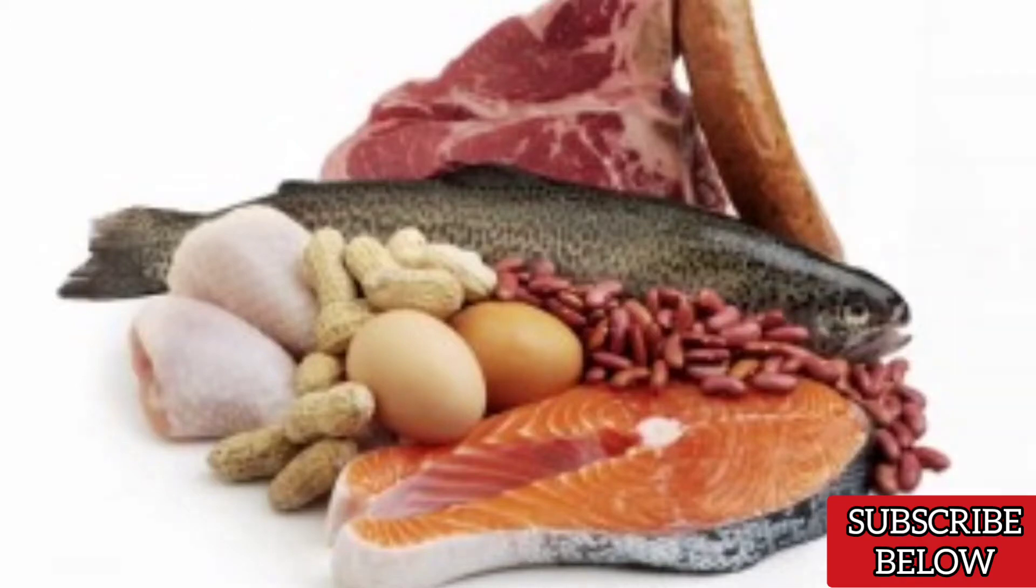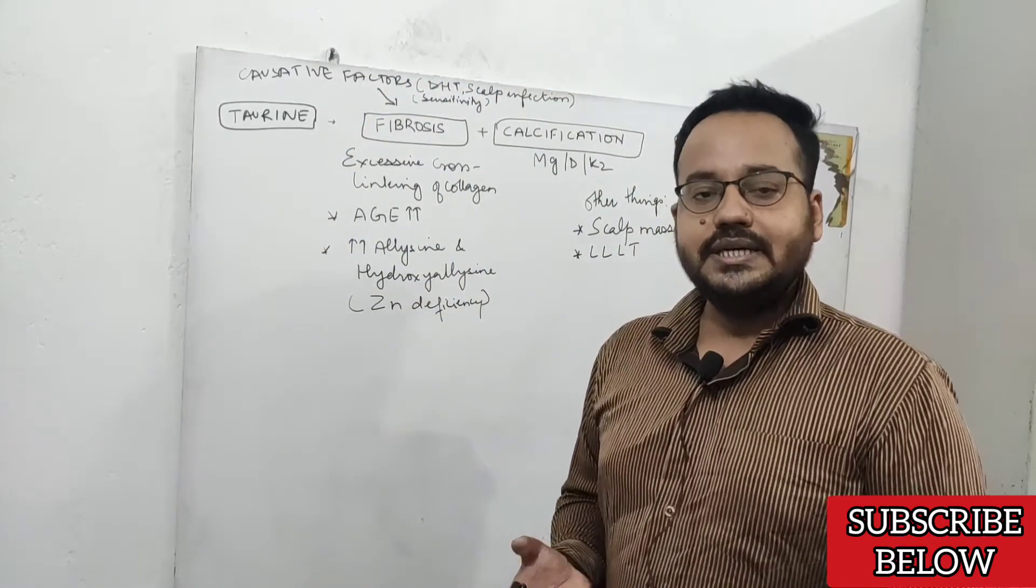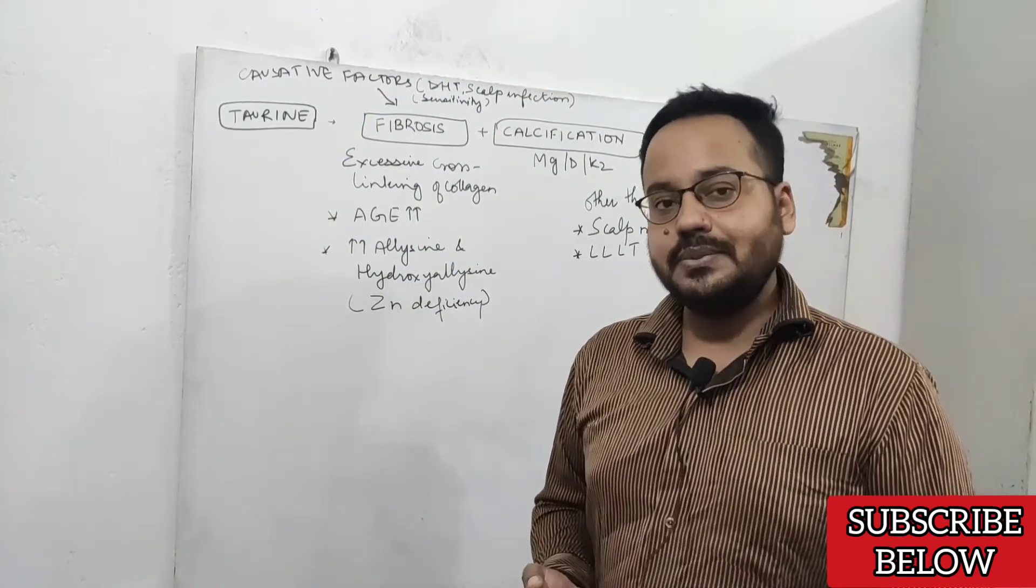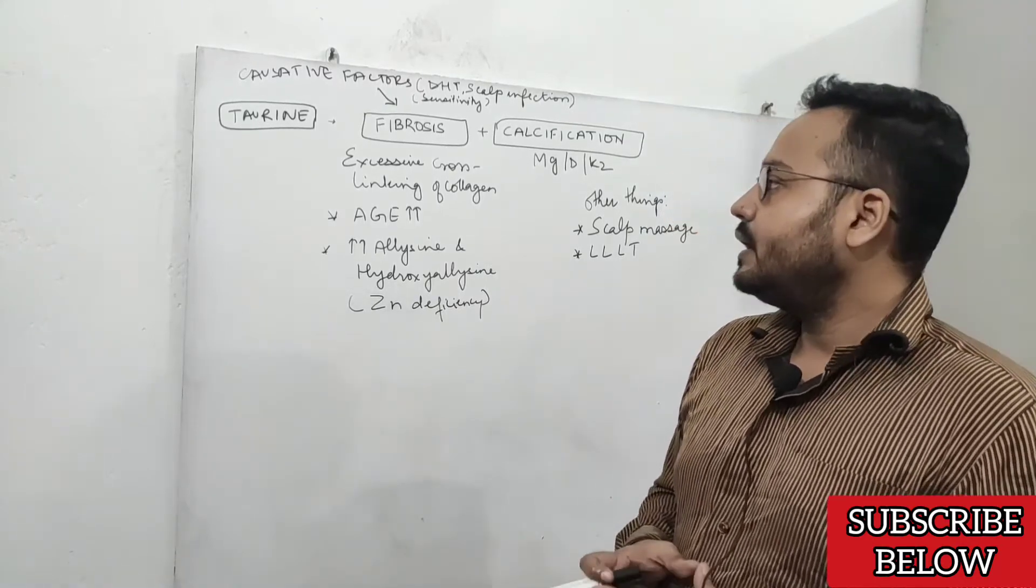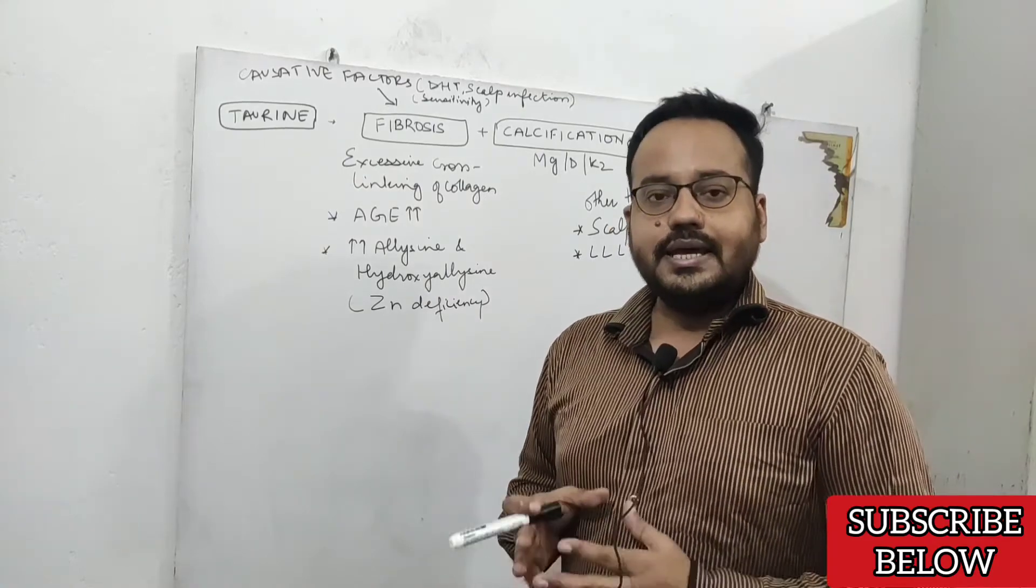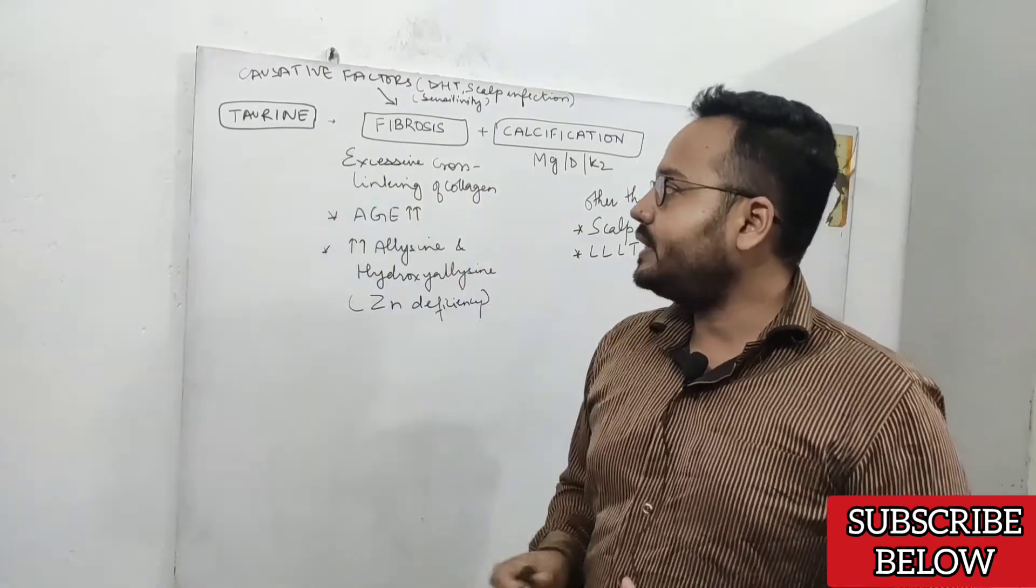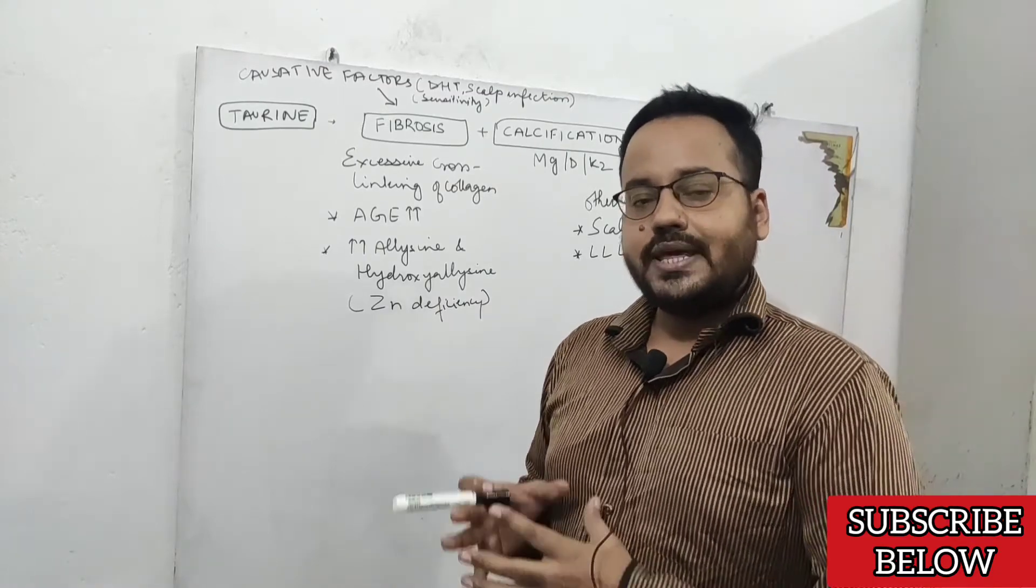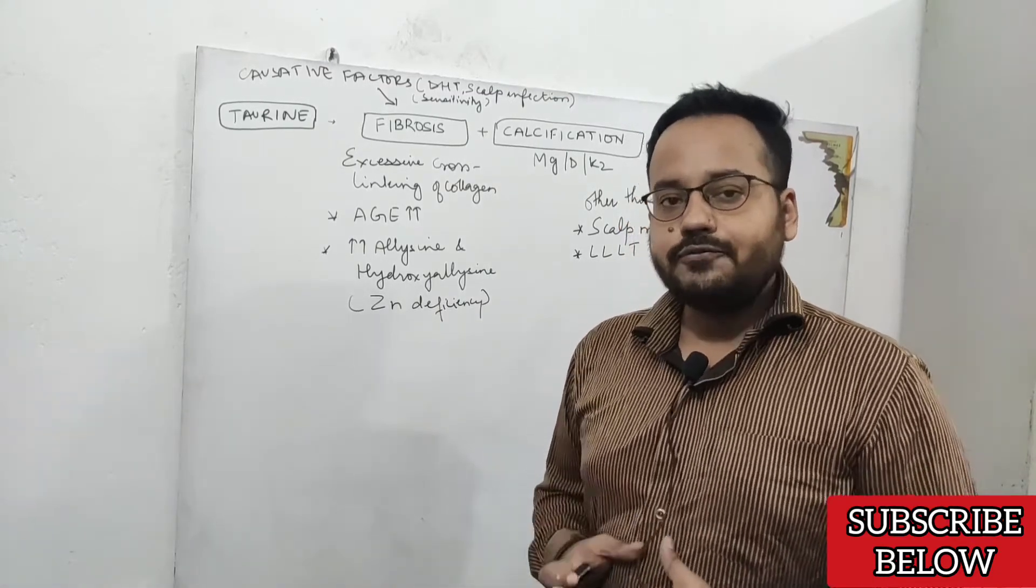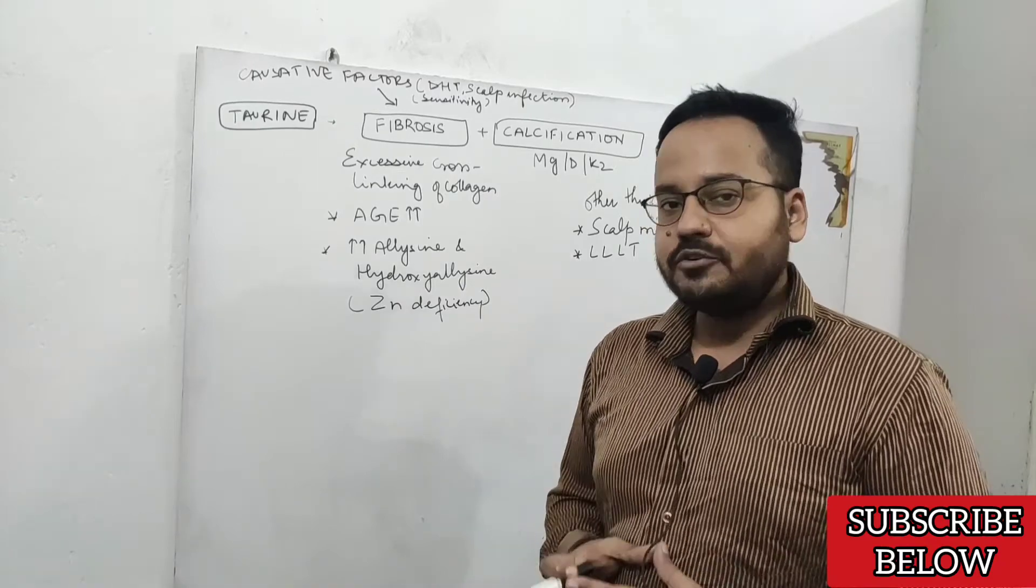You must eat sulfur-rich foods like meat, cruciferous vegetables, and allium vegetables like garlic, onion, radish, and carrot. If you are a vegan, the chances of being taurine deficient are very high because taurine is naturally found in animal and animal products, so vegans have to be extra careful.